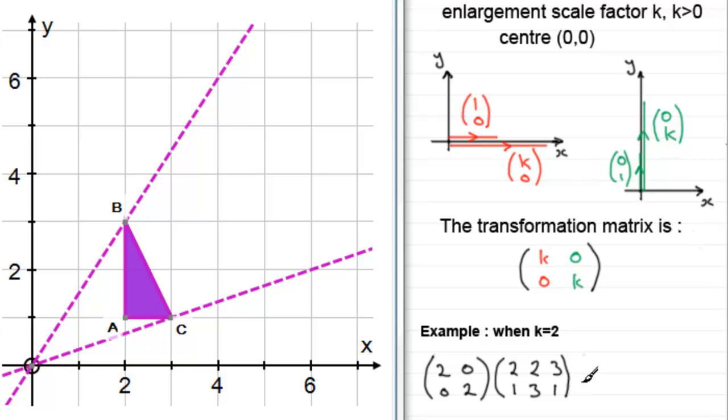And if we multiply these two matrices in the usual way—I'm assuming that you're familiar with matrix multiplication—when you come to doing (2,0) times each of the columns, you end up just doubling the top row, so that would be 4, 4, 6. And when you do (0,2) times each of the columns, you end up doubling the bottom row, so you get 2, 6, 2.